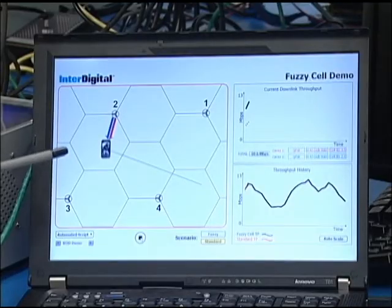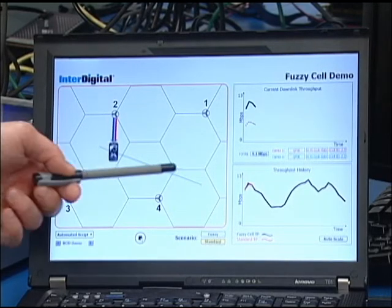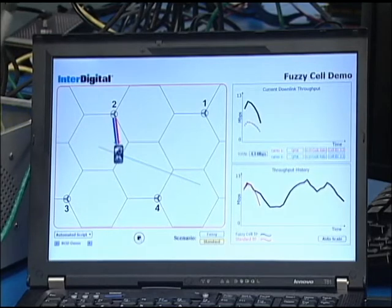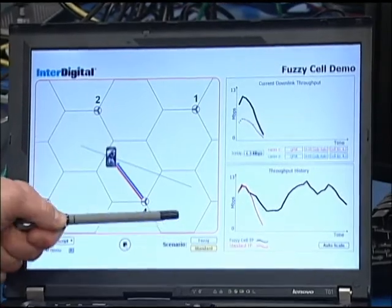What we're demonstrating here is a simulated network where our user equipment is moving across several different cell sites and crossing two different cell edges. We're showing a standard topology running and then we're going to show the fuzzy cell topology running.